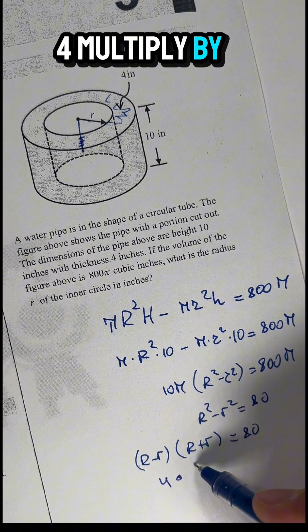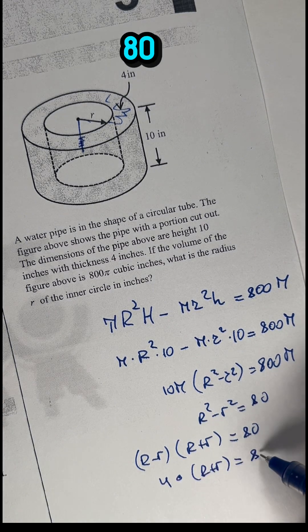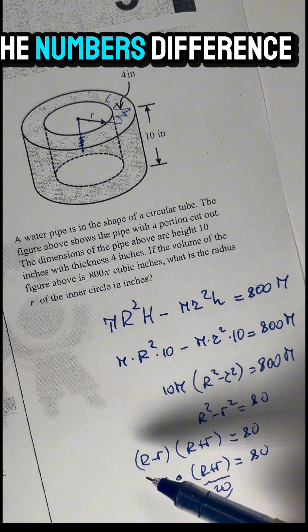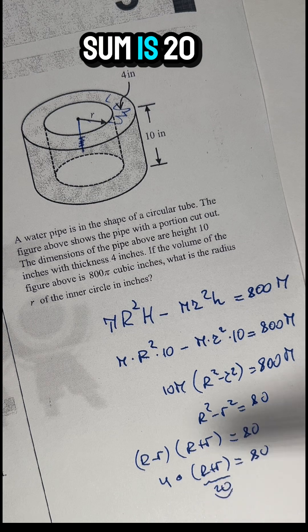So 4 multiplied by (R + r) equals 80, which means R + r equals 20. The numbers whose difference is 4 and sum is 20.